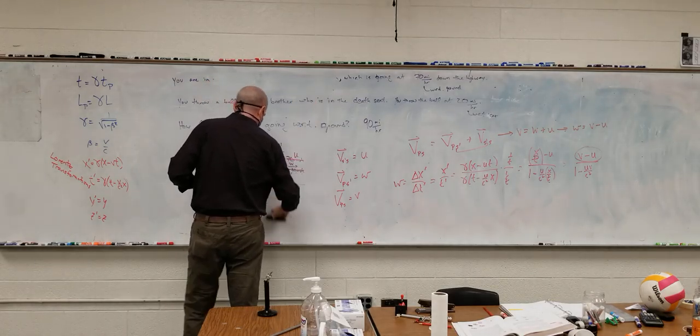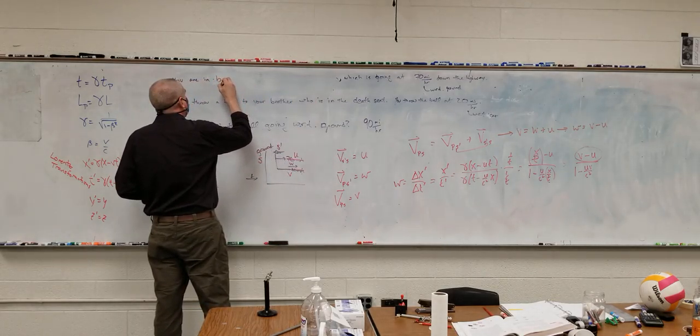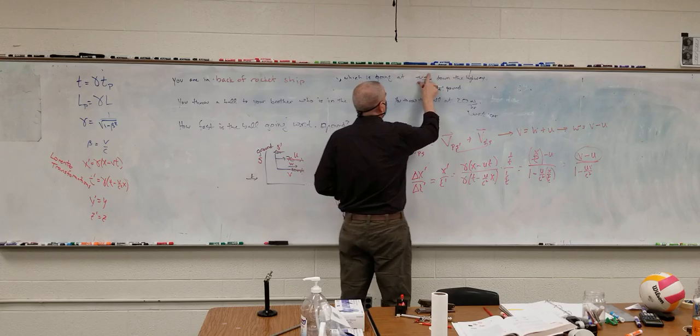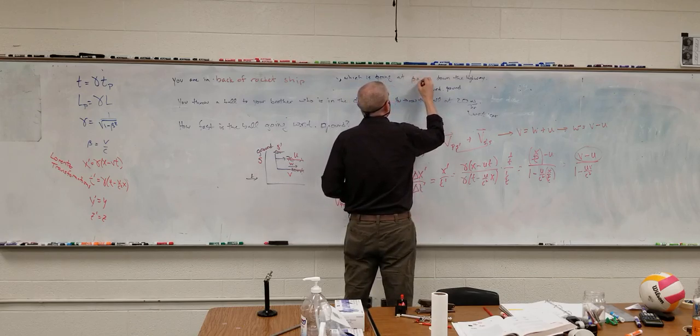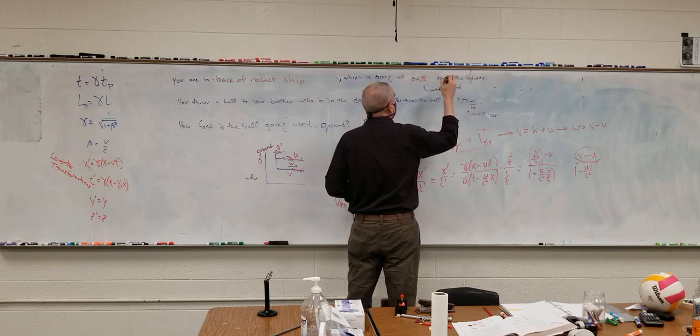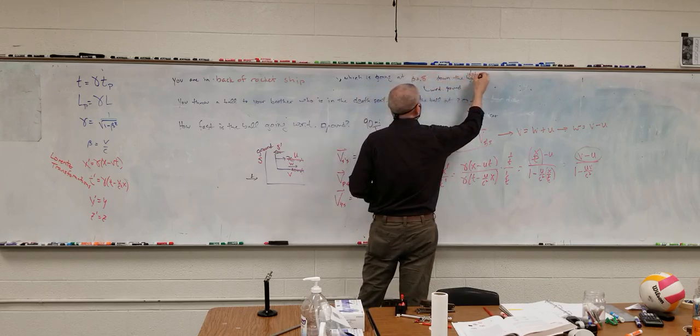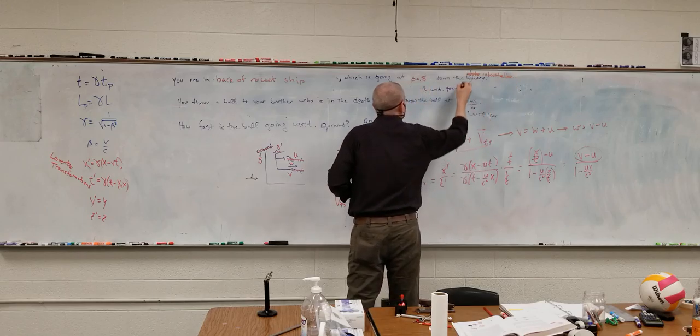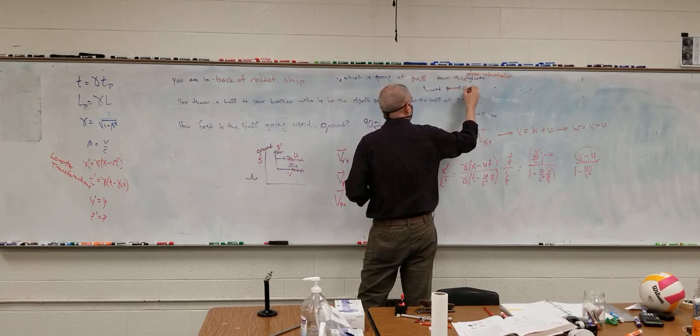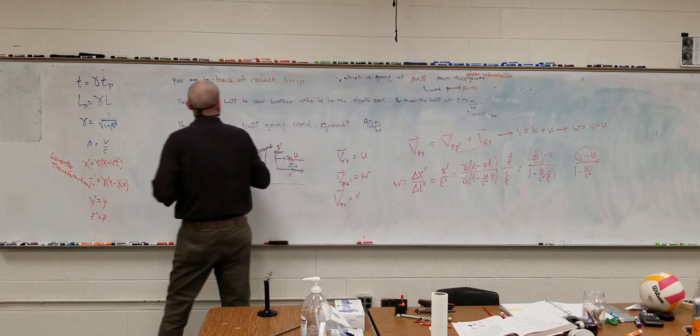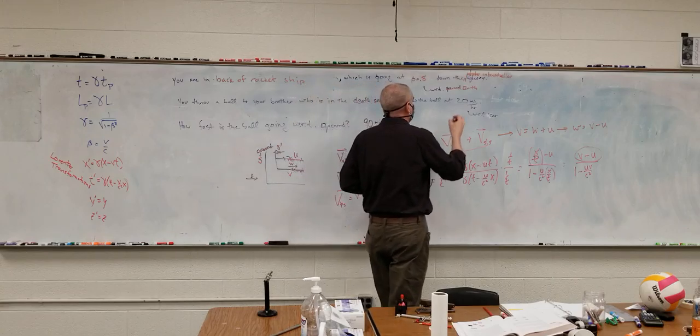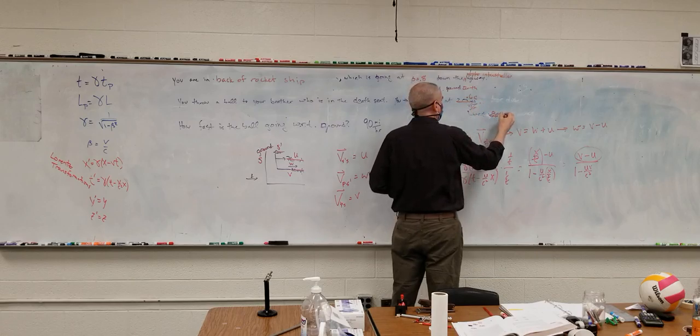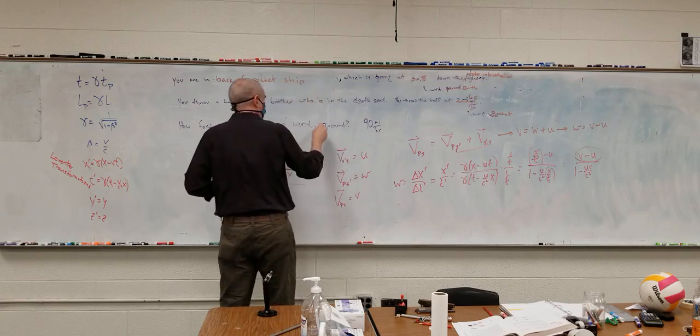You're in back of rocket ship, which is going at beta is equal to 0.8 down the interstellar highway with respect to Earth. You throw a ball to your brother who is in the death seat. And you're throwing it at 0.6 times the speed of light with respect to the rocket. How fast does the ball go off while going with respect to Earth?